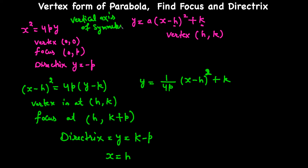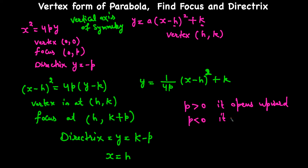When we have a vertical axis of symmetry, the parabola opens upward if P > 0, and opens downward if P < 0.